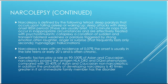Genetic factors play a role: 90 to 100% of Asian and Caucasian narcoleptics possess the HLA DR2 and DQWL phenotypes, compared with 20 to 40% of non-narcoleptics. The probability of developing narcolepsy is 40 times greater if an immediate family member has the disorder.